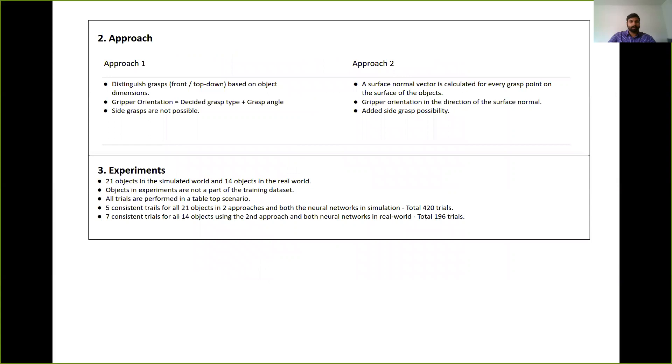Now we have the two implementation approaches. So the first approach is a simple approach. We use the object dimensions to decide a grasp type. So the grasp types are front grasp and top-down grasp. And the gripper orientation is then calculated using this decided grasp type and the grasp angle that is generated by the neural networks. In this approach, side grasps are not a possibility.